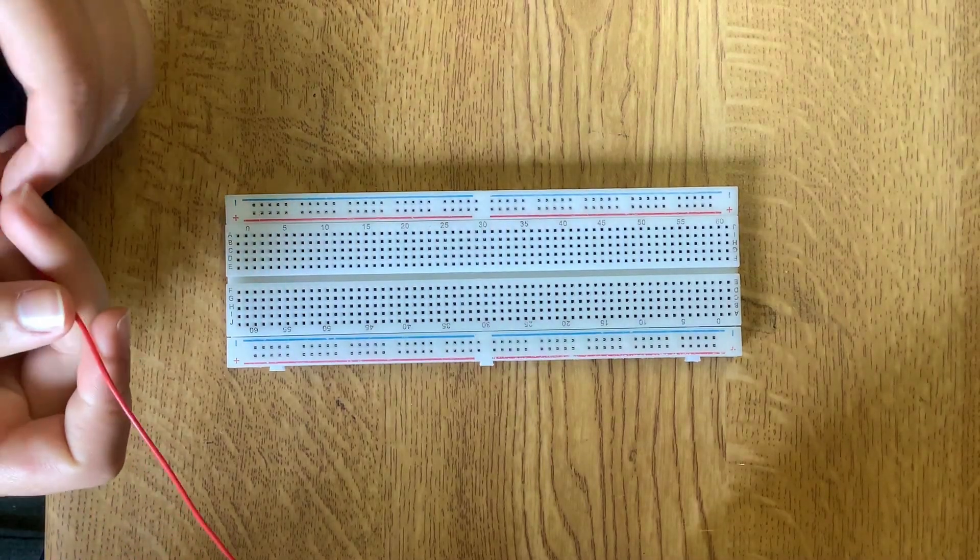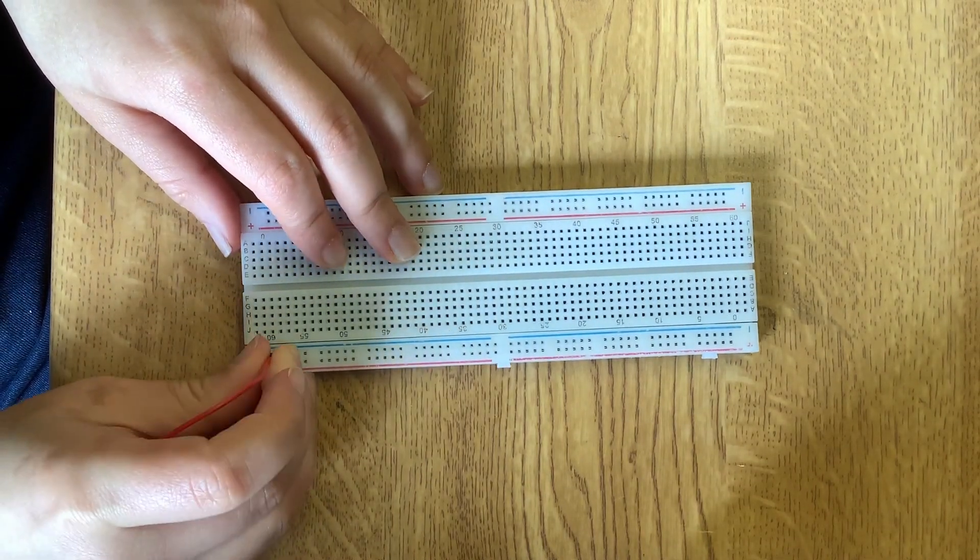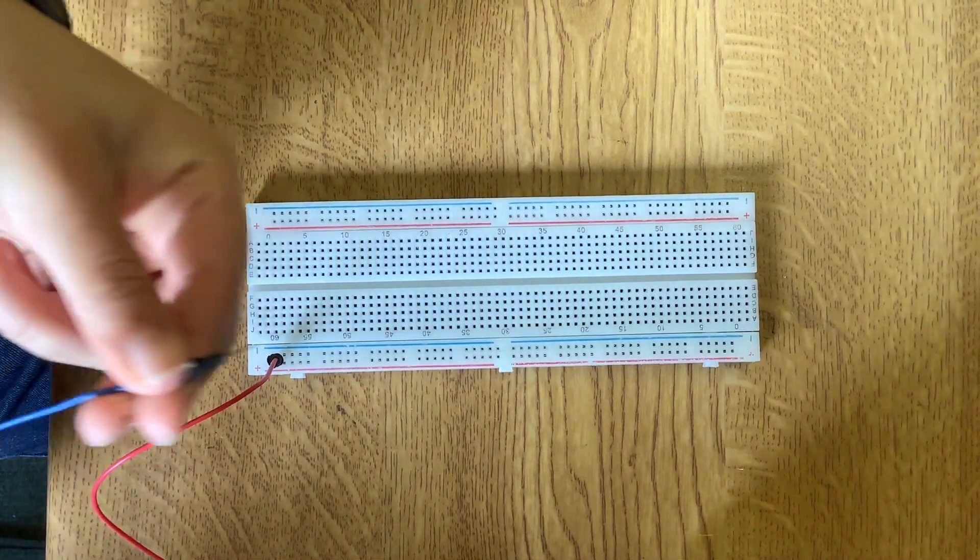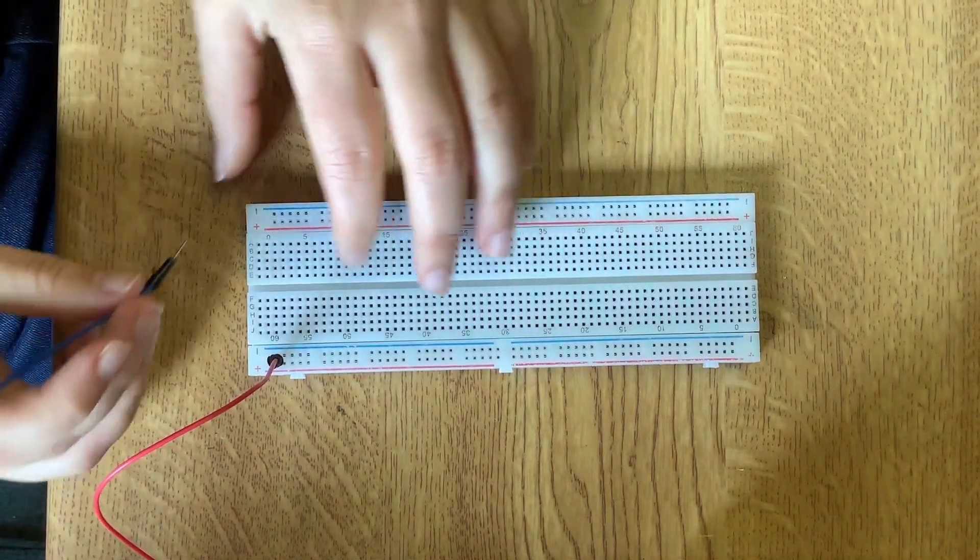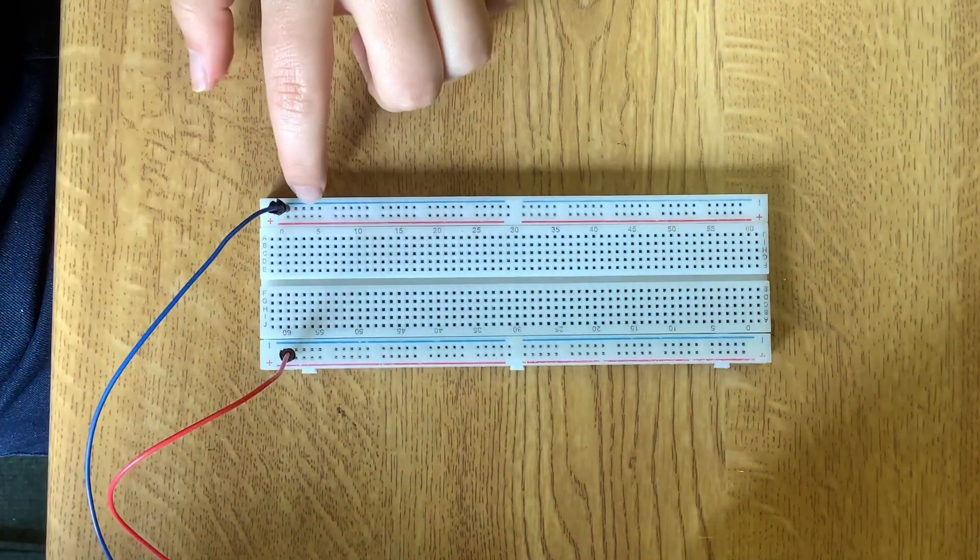Now we're going to do an example. I'm going to use this as 3.3 volts input and this whole line is now 3.3 volts. This is going to be ground so in here this whole line is now ground.